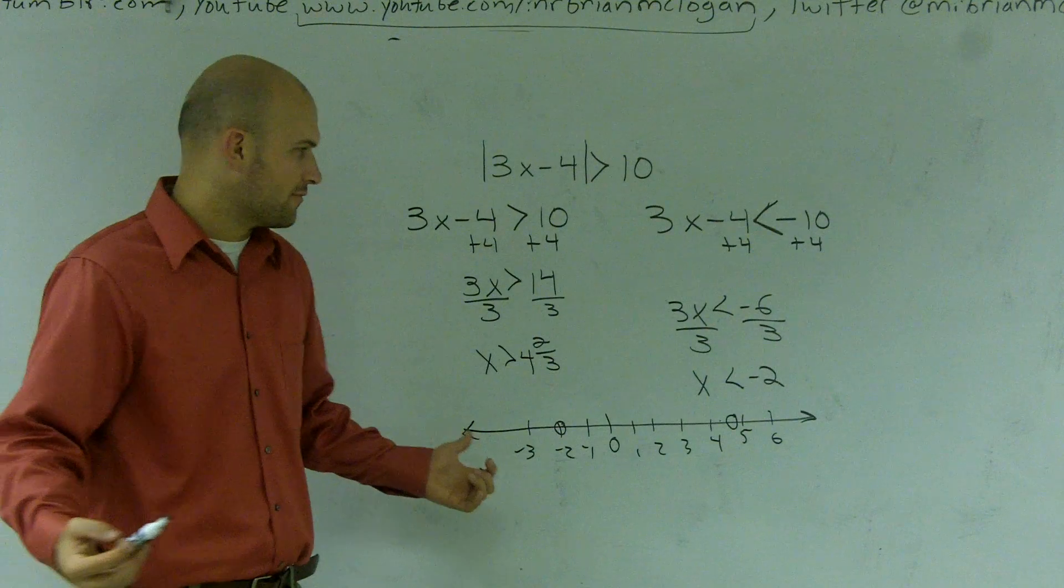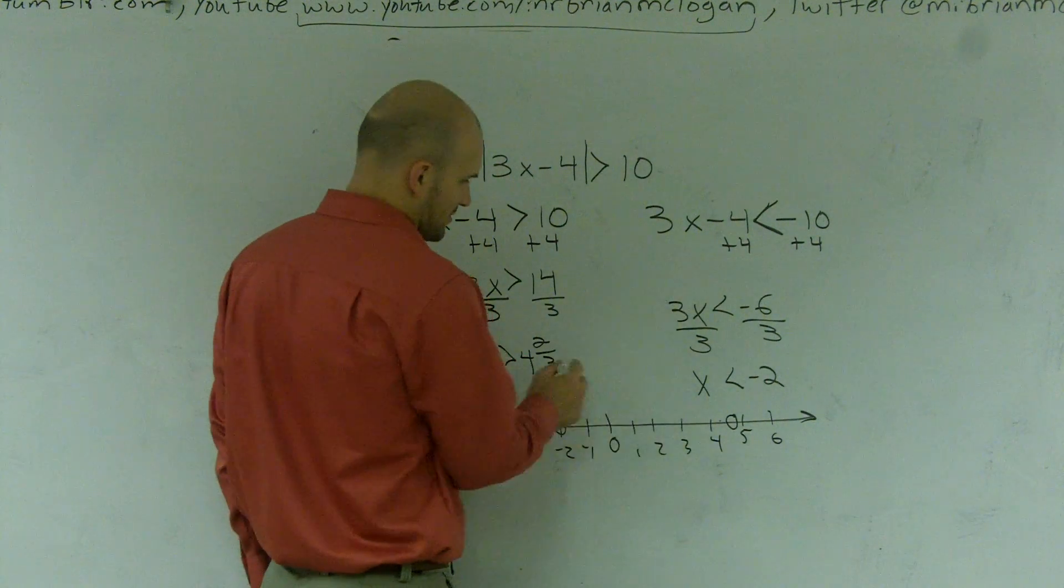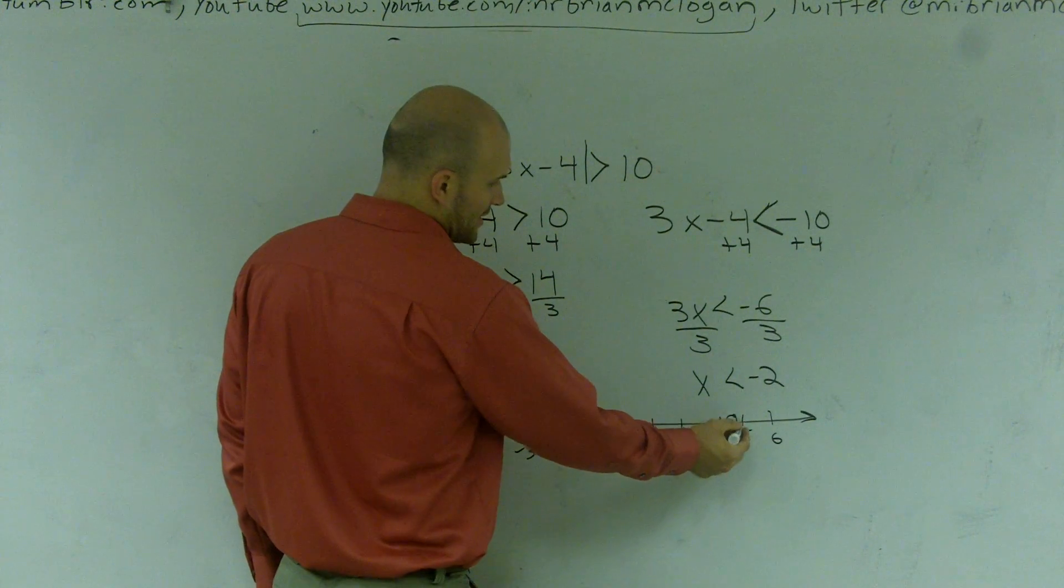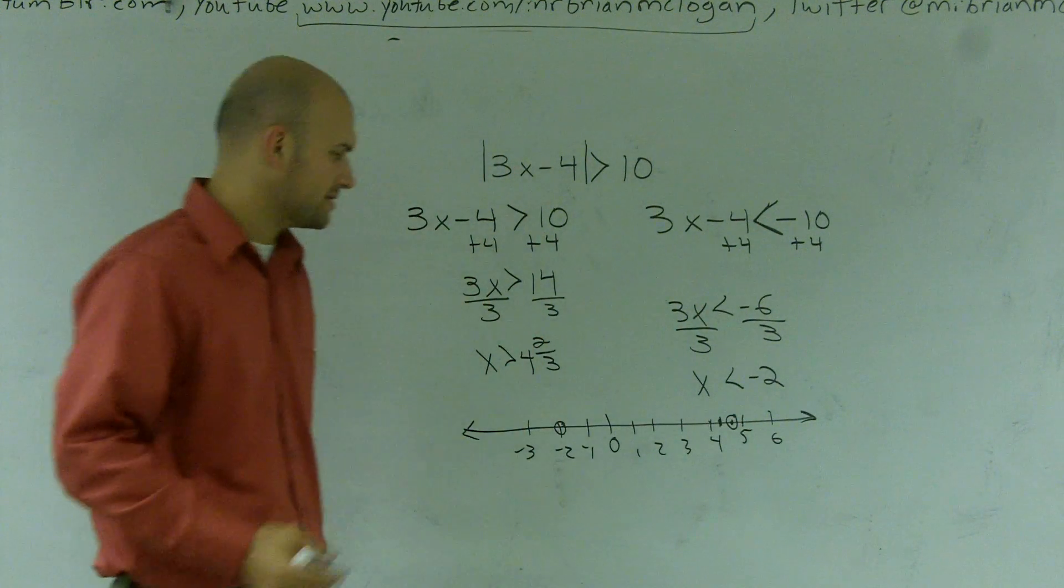And if you don't know how to plot 4 and 2 thirds, just break it up. You know, here's 4, here's 5. Well, 1 third would be here, 2 thirds would be here, and 3 thirds would be there. So let's break it up into plots.